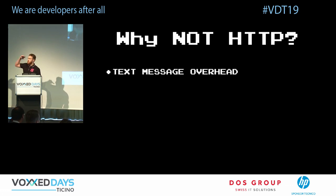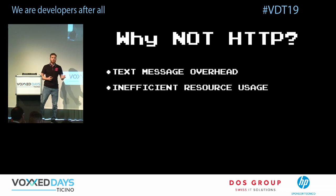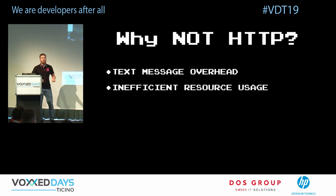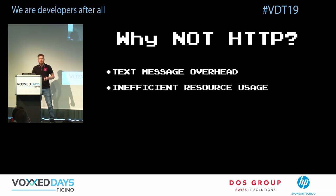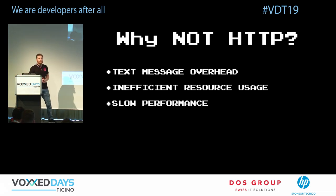With HTTP/1, a new connection must be created for every request. With HTTP/1.1, you can pipeline connections, but there's still overhead — the server has to deal with all these connections, which leads to slower performance.